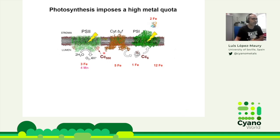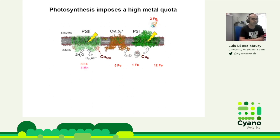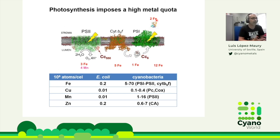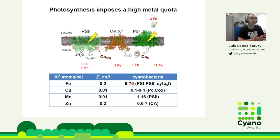There's a lot of iron needed for PS2, cytochrome B6F, PS1, but also for cytochrome C6 or ferredoxin, which are the soluble electron transporters in photosynthesis. This is reflected in much higher concentrations of metals in photosynthetic organisms. Comparing an E. coli cell to the range of metals found in cyanobacteria, iron is about 20 times more abundant in cyanobacteria.